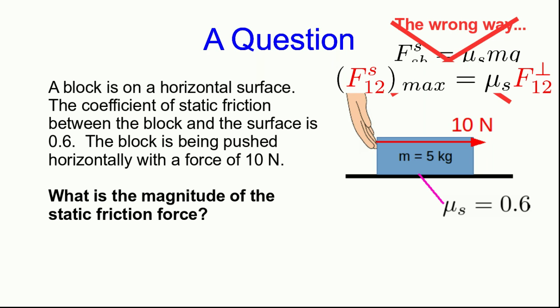That formula gives the maximum static friction, not the actual static friction. All that's telling us is that whatever the static friction is, it had better be less than 30 newtons. The correct way is to realize the block isn't sliding, its acceleration is zero, and so the vector sum of forces must be zero. Therefore, the static friction must exactly cancel the 10 newton force, meaning it must be 10 newtons to the left.